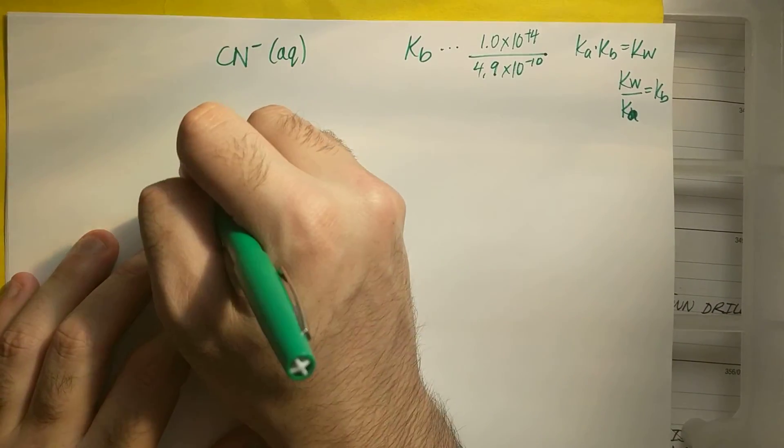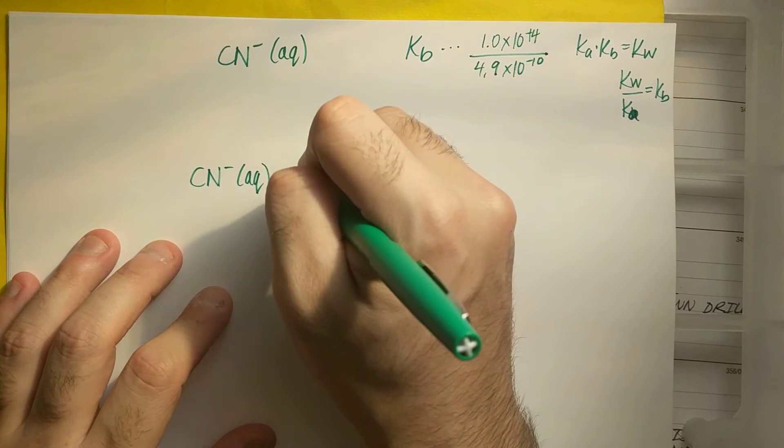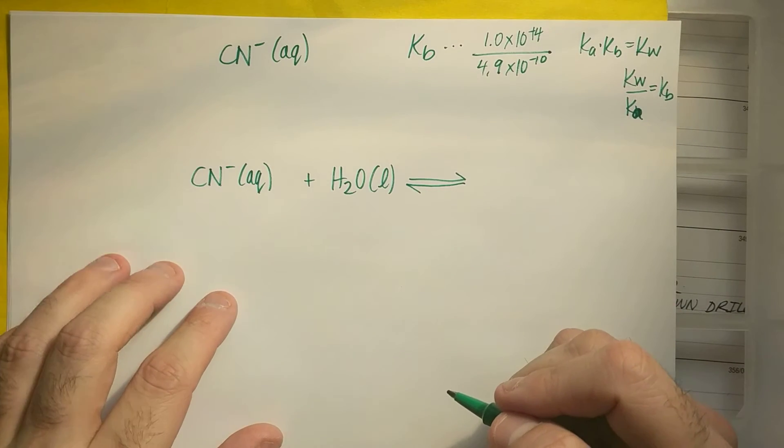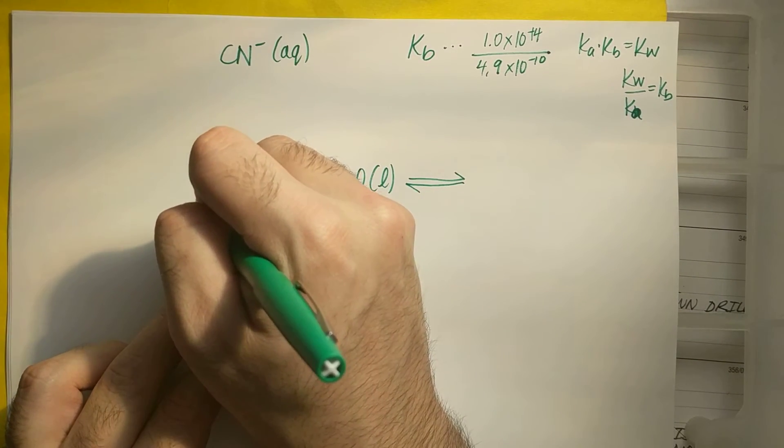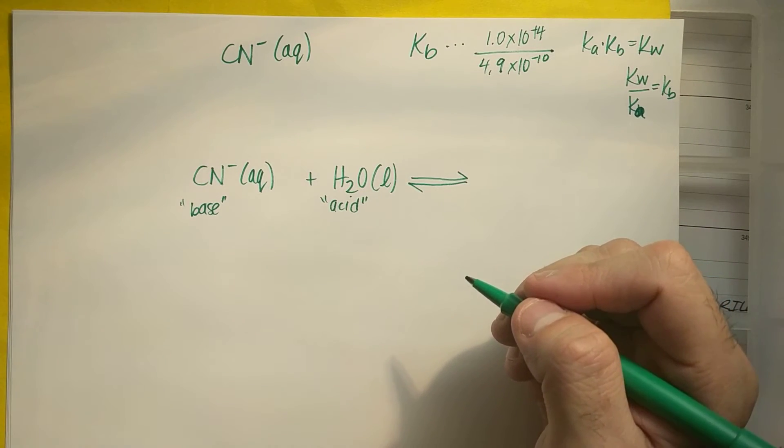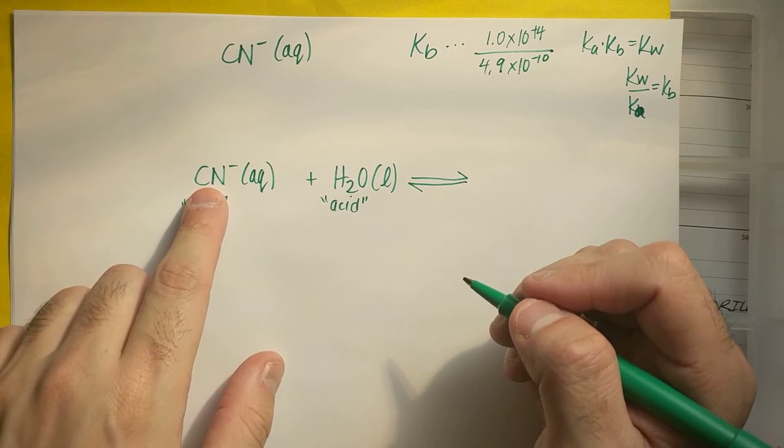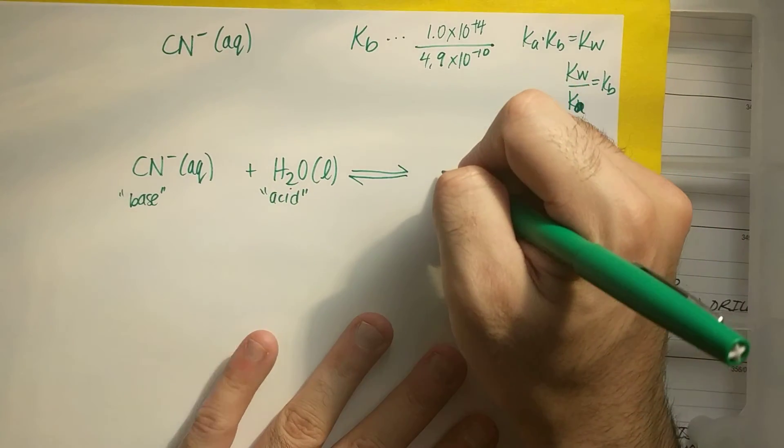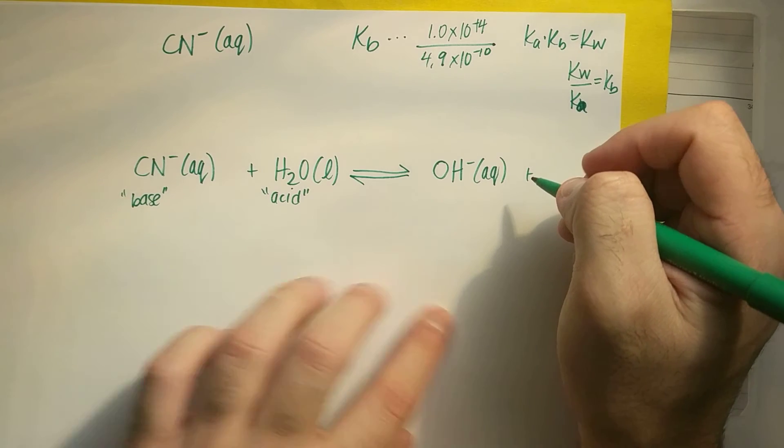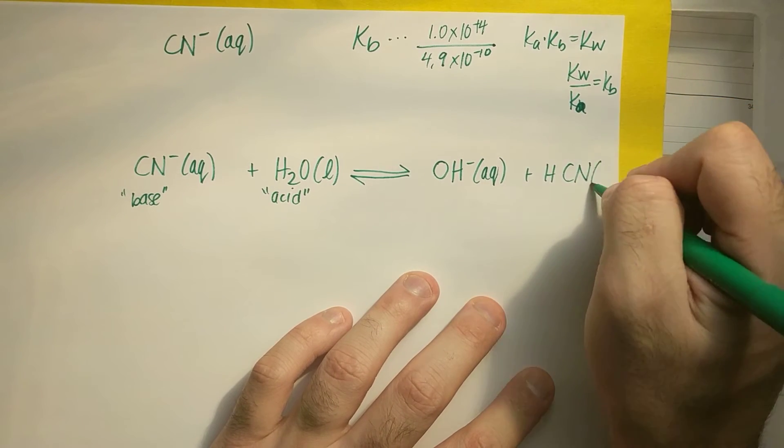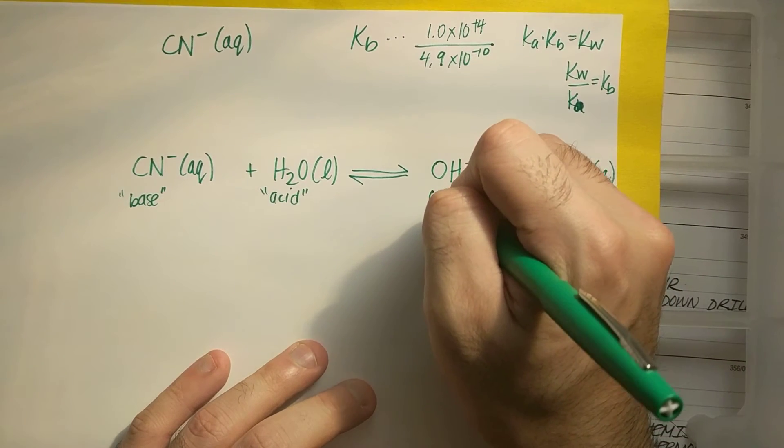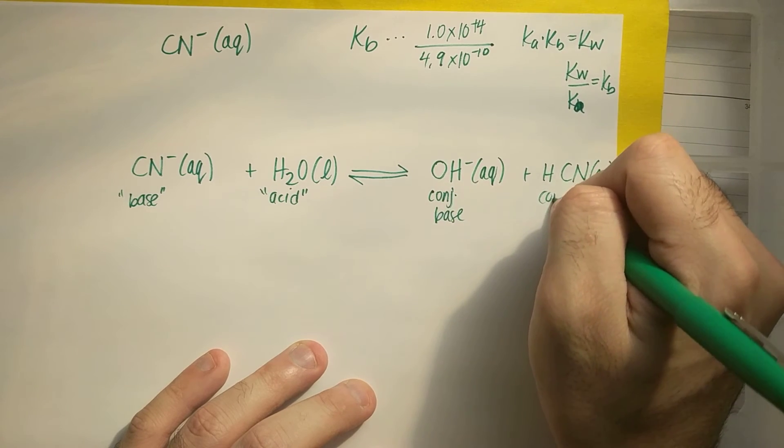So if I want to write this equation, this is my base now. I could do CN minus aqueous. I'm going to add it to water, liquid. And instead of it acting like an acid now, this is going to be my base. And water is going to act as an acid now. And it's going to get deprotonated, or a proton is going to be taken away. That CN minus is going to take away an H from H2O. And I'm going to get OH minus plus, if I take an H from H2O, I'll get HCN, aqueous. This would be the backwards of it. And here's my conjugate base. And here's my conjugate acid.